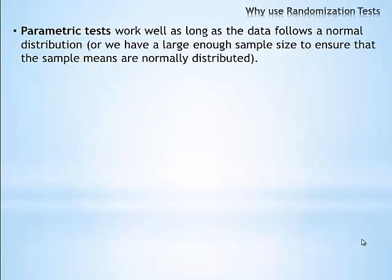Hypothesis tests that involve theoretical distributions, such as the normal or t-distribution, are called parametric tests, meaning that we are testing parameters, such as the mean, from a specific distribution. Parametric tests work well as long as several assumptions are met, such as independent and identically distributed samples, and assuming the data follows a normal distribution, or that we have large enough sample sizes to ensure that the sample means are normally distributed.